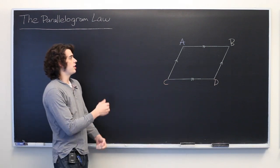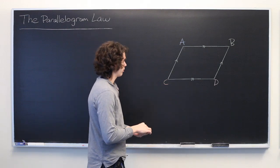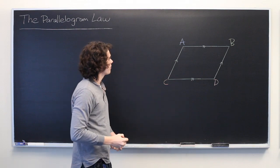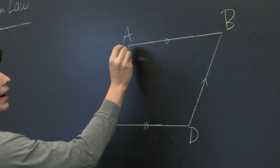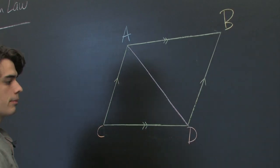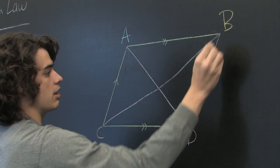Before we do, let's take a look at this parallelogram we have here. We labeled it ABCD for the four vertices. Now let's go ahead and draw in the diagonals. We have the line segment AD and the line segment CB.